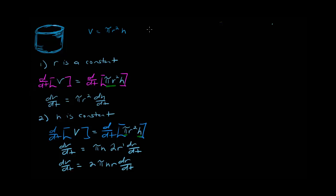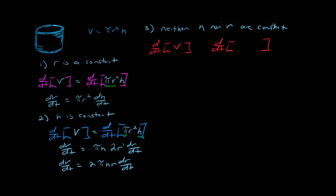The last scenario — maybe the most interesting — is when neither h nor r is constant. We treat volume, h, and r all as functions of time. On the left side, the derivative gives dV/dt as before. On the right side, since r and h are both functions, we have a product of two functions, so we must use the product rule for differentiation.